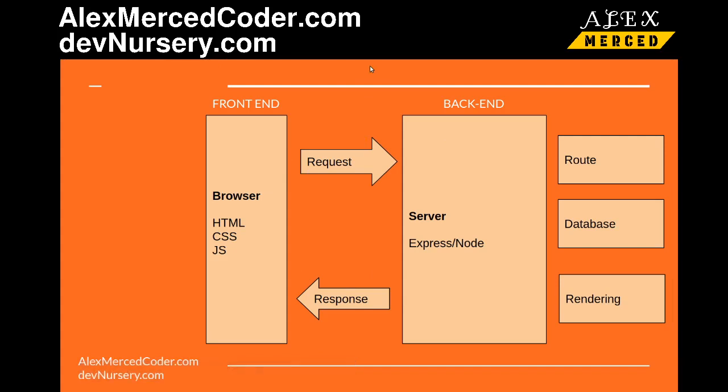The difference between front-end and back-end code is where the code runs. In HTML, CSS files, and JavaScript files, they get sent to your browser from a website that you're accessing, which then gets interpreted by your browser and renders a website on your screen — that's front-end code.